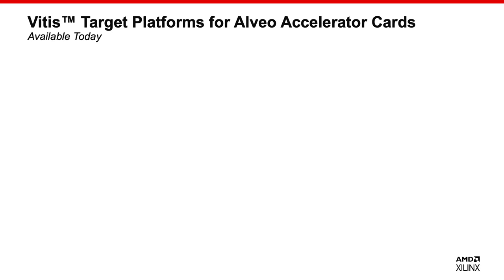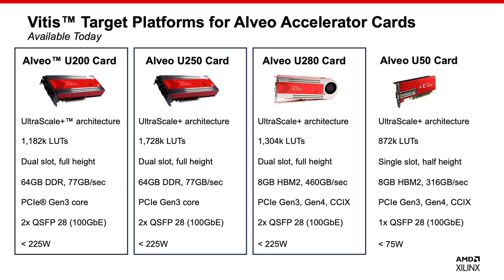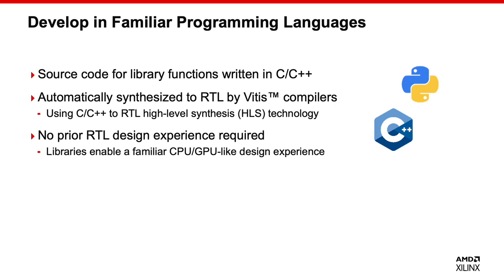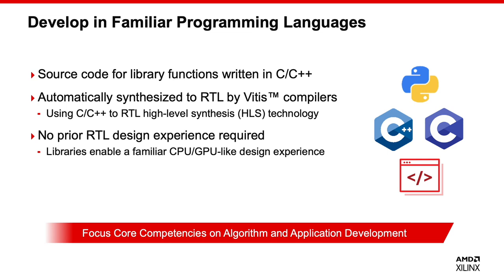L2 kernels are built into XCL bins targeting Alveo accelerator cards. Here is the list of Alveo cards available today. In my application, I use Alveo U50. As discussed in previous slides, source codes for library functions are written in C and C++, which improves code readability. You don't need to have knowledge of RTL — focus on the algorithm. Leave the heavy part with the VITES libraries, and you can focus on other development.